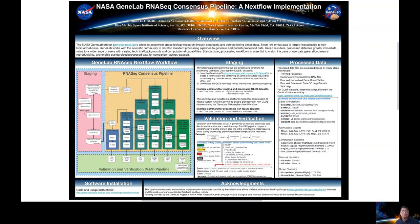Before I get into the implementation, I want to give a quick overview of GeneLab. The GeneLab project seeks to accelerate space biology research through cataloging and democratizing space biology omics data. This includes curating rich experimental metadata, raw data, and processed data all in one place. GeneLab also works toward standardized processing approaches enabling multi-dataset research, ultimately expanding the accessibility of space biology data from citizen scientists to domain specialists.